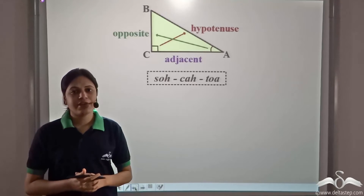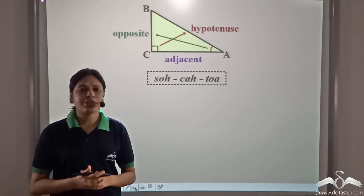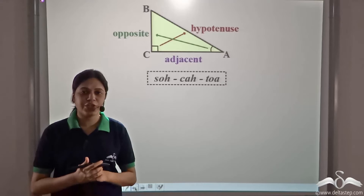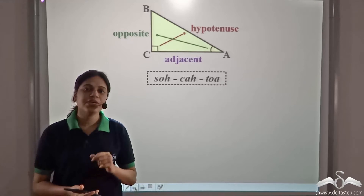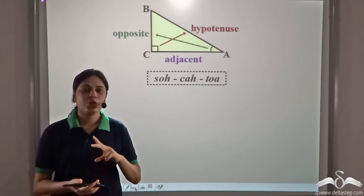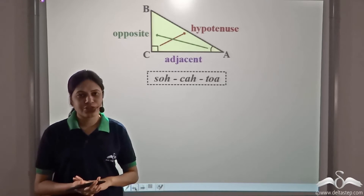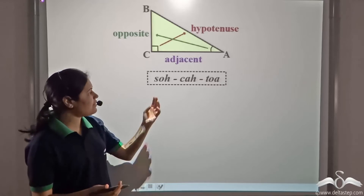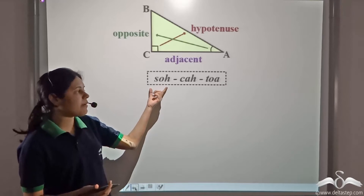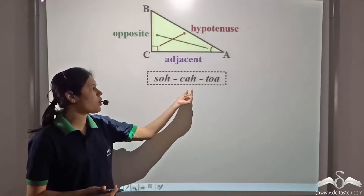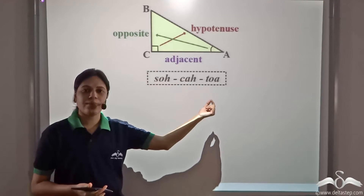So far, we have learnt the three important trigonometrical ratios: sine, cosine, and tangent, and that we can remember them using SOH-CAH-TOA.